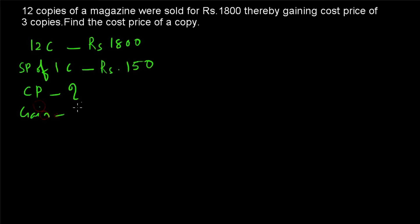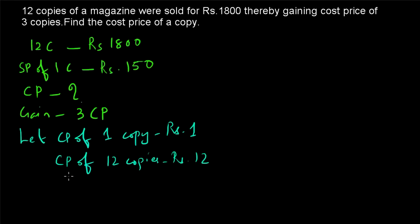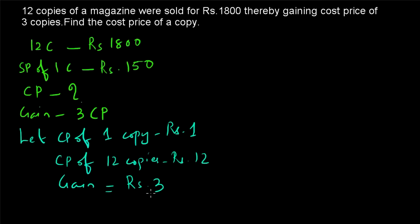The gain is 3 CP — the cost price of three copies. Let the cost price of one copy equal ₹1. Then the cost price of 12 copies equals ₹12. And the corresponding gain, since 12 copies are sold and the gain is the cost of 3 copies, equals ₹3. The key point: the gain must be associated with the corresponding cost price.